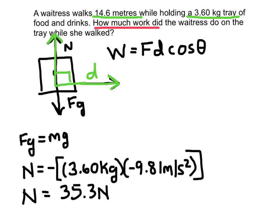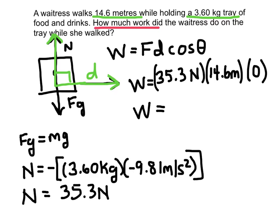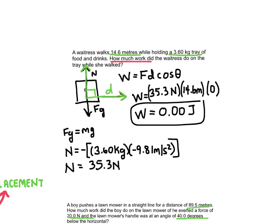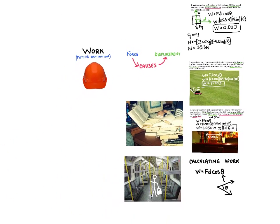Now the cosine of 90 degrees is 0. I can show you the work, but we know the answer is going to be 0. So I have 35.5 N times 14.6 times 0. Our answer is 0 joules of work. And that is work with a physics definition.